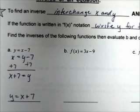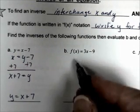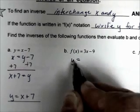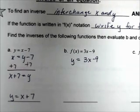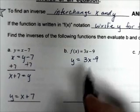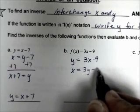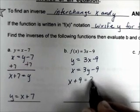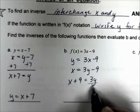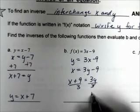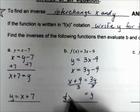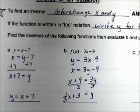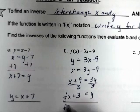For b, f(x) = 3x − 9. Replace f of x with y, then interchange x and y: x = 3y − 9. Solve for y — add 9 to both sides to get x + 9 = 3y, then divide by 3. So y = ⅓x + 3, which we write as f inverse of x = ⅓x + 3.